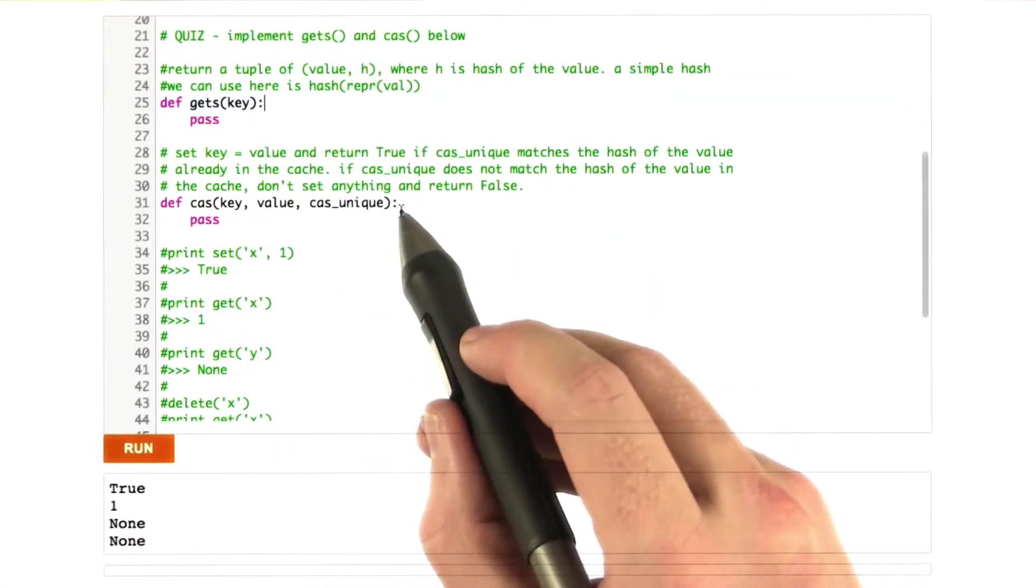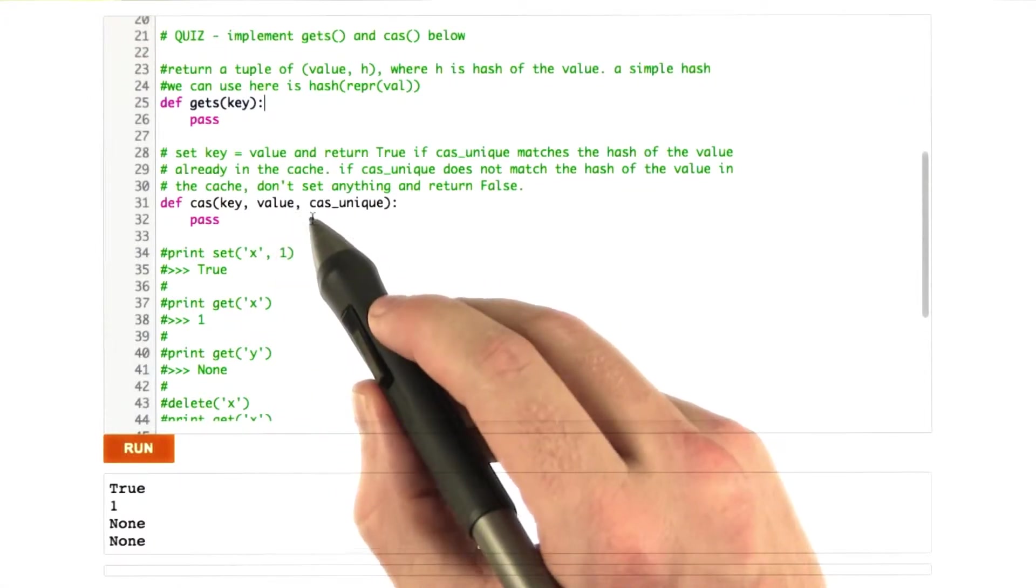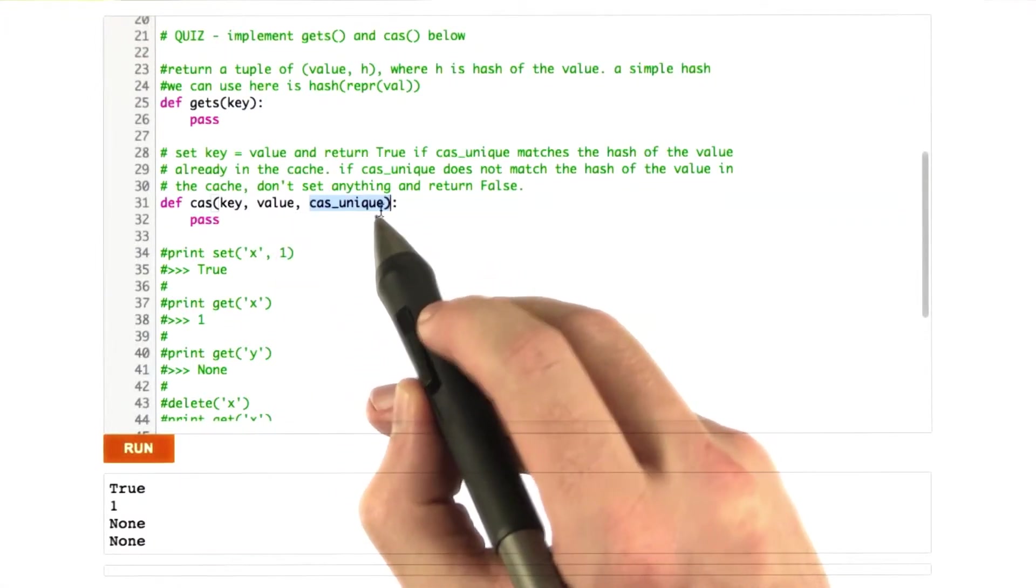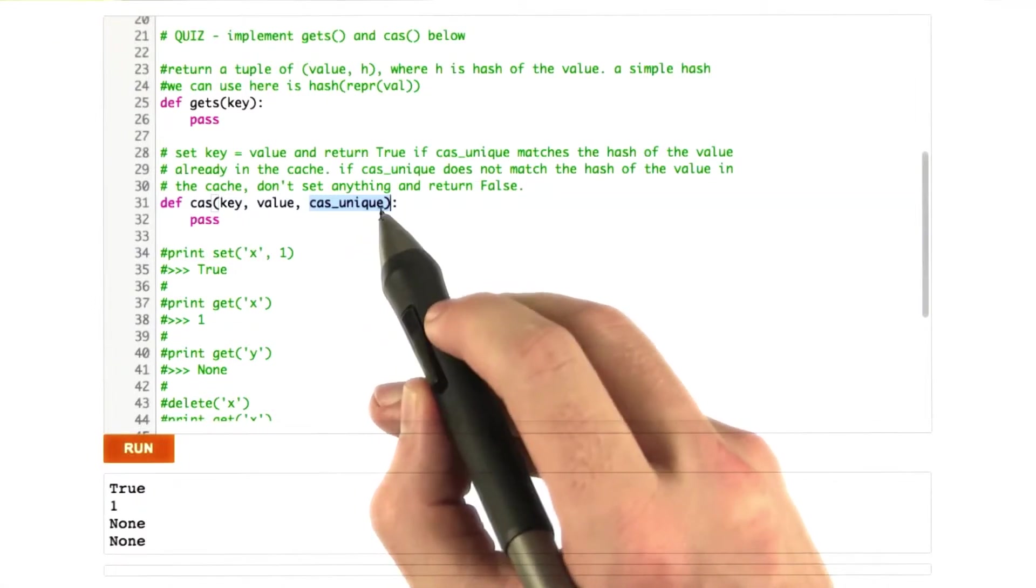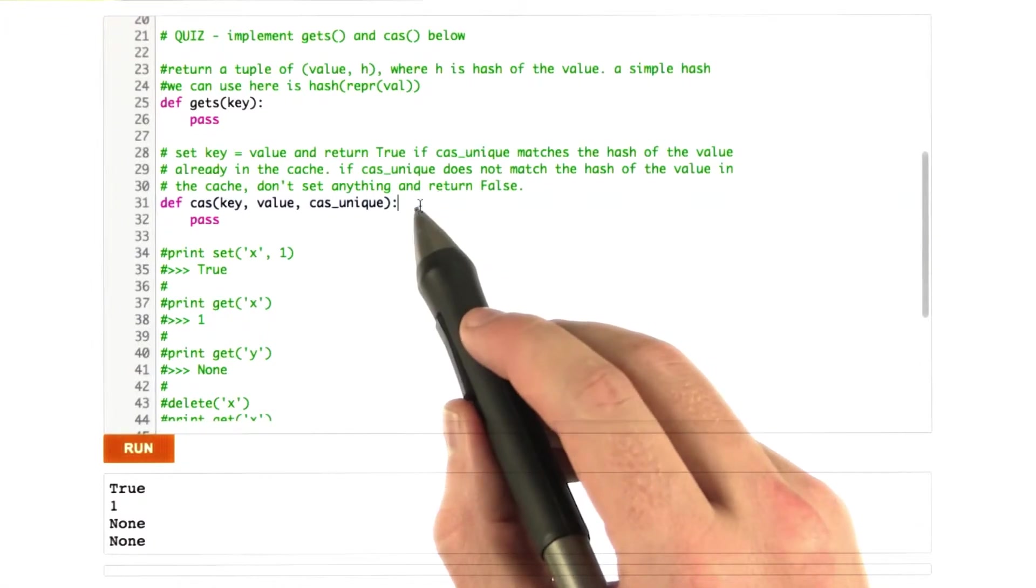Now, cas is the more complicated function. This sets the key to equal value in our cache and return true if the cache unique matches the hash of the value that's already in the cache. If the cache unique does not match the hash, we don't set anything and we return false.